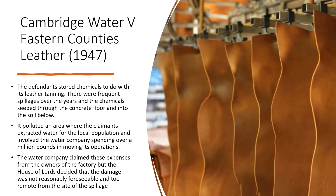Cambridge Water v Eastern Counties Leather also illustrates foreseeable damage. The chemical spillages seeped through the concrete floor into the soil and contaminated the water supply for the local population. This involved the water company spending over a million pounds moving its operations, and it sought to recover the expenses from the factory owners. However, the House of Lords decided that the damage was not reasonably foreseeable and the contaminated water was too remote from the site of the spillage, so there was no liability for those particular damages.